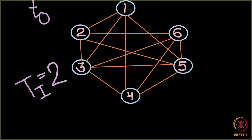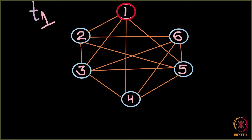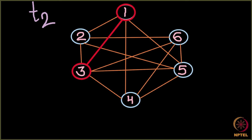Let's now look at another example where the infection period Ti is changed to 2. You remain infected with measles for 2 days, and after these 2 days you recover. Again, node 1 catches the infection at day 0. Node 1 now gets day 1 and day 2 to infect its neighbors, recovering at the end of day 2. On day 1 it infects just node 3. On day 2, both node 1 and node 3 are infecting people — node 3 infects node 2, and node 1 infects node 4.